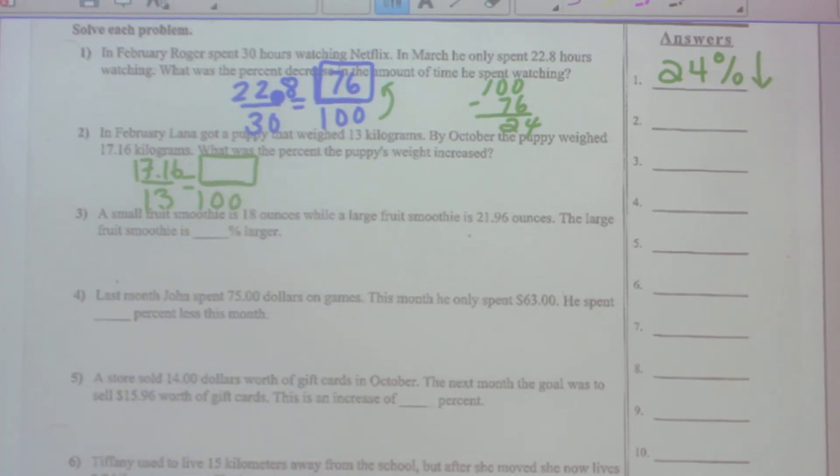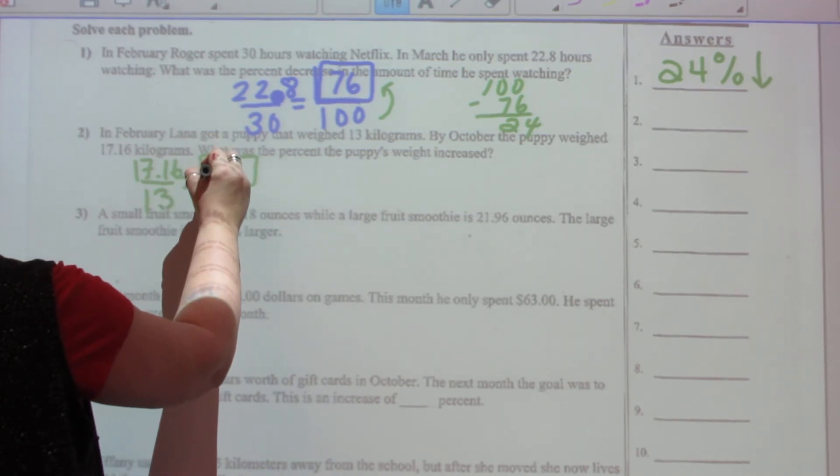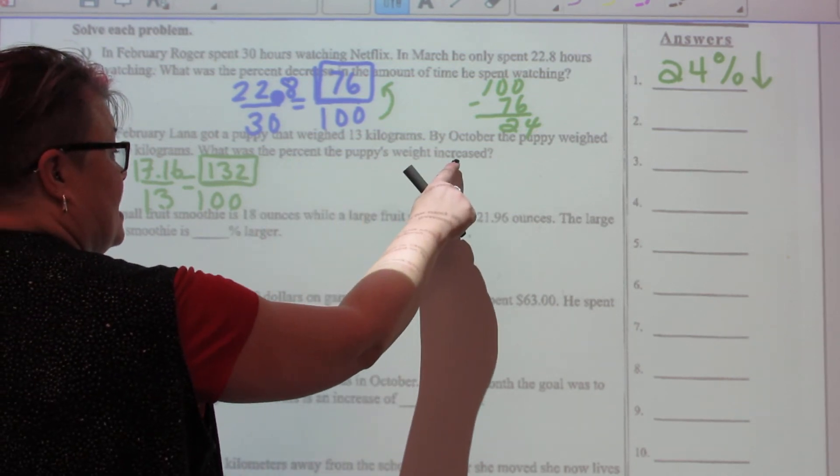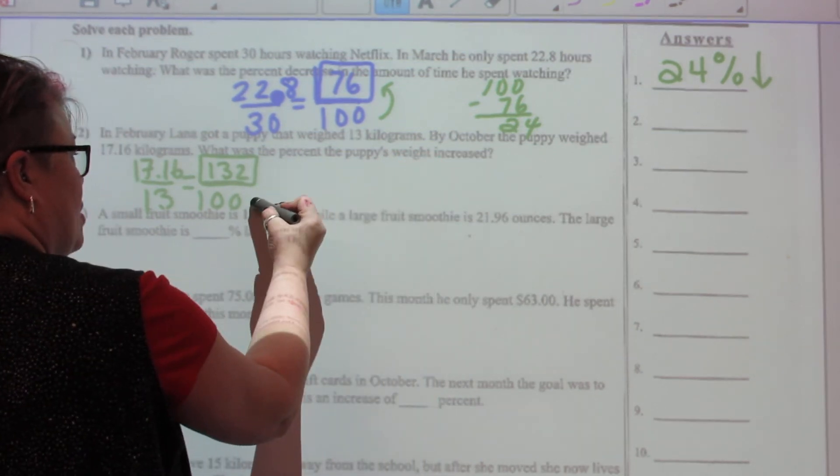So let's type that in and see what we get. 17.16 times 100 divided by 13, so I get 132 here. Okay, so the puppy's new weight isn't 132 percent.